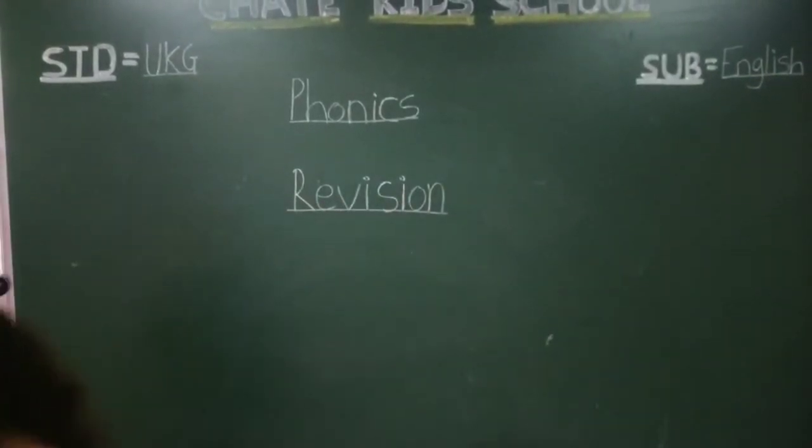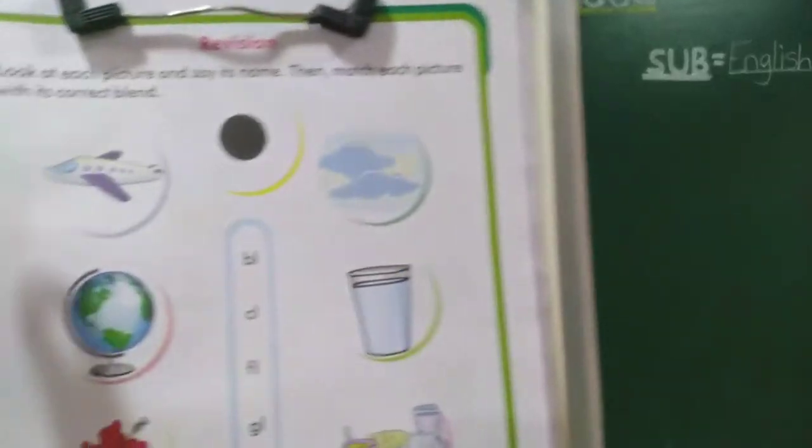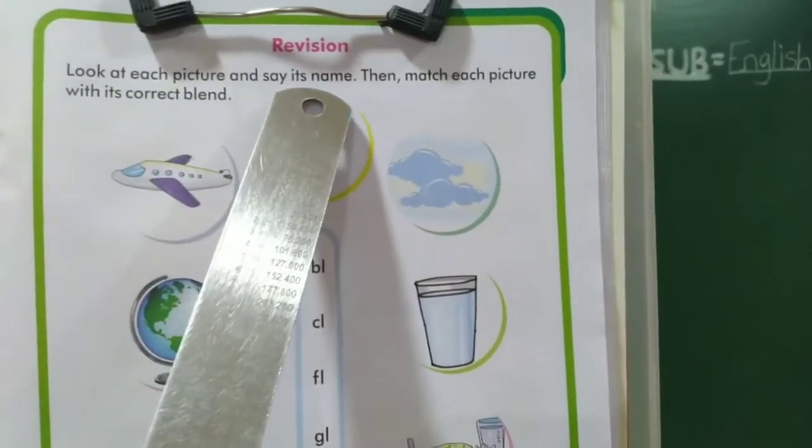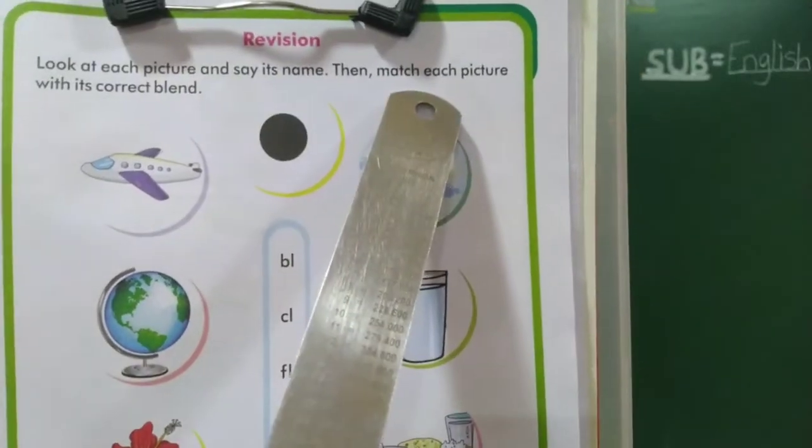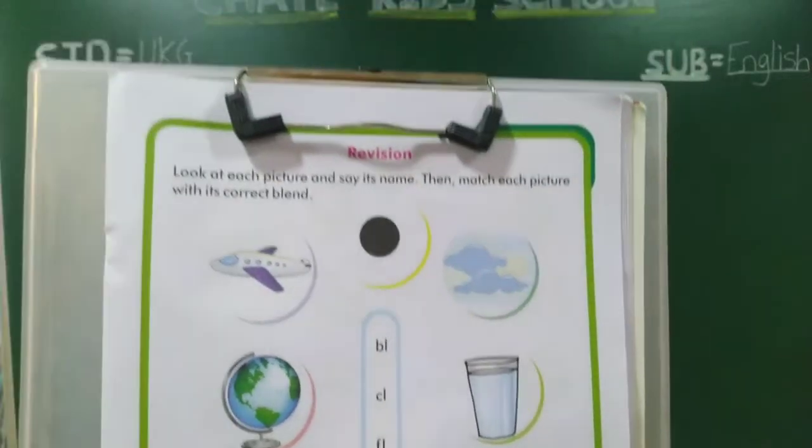Take your phonics book, page number 39. Look at the pictures and say its name. Then match each picture with its correct blend.